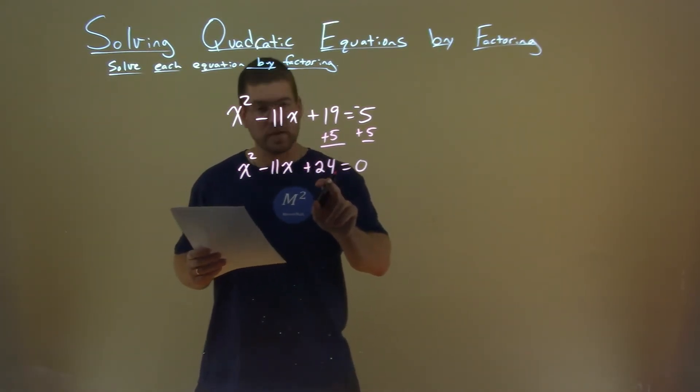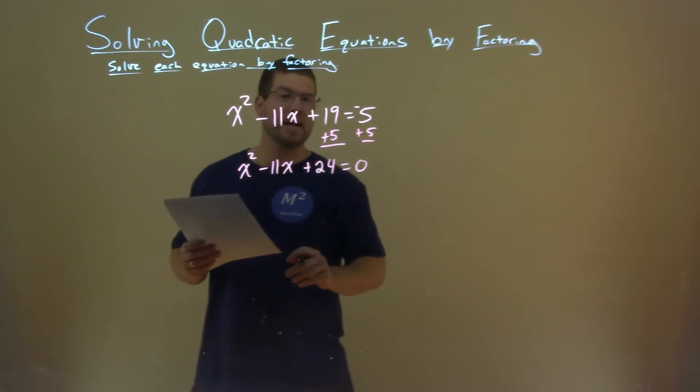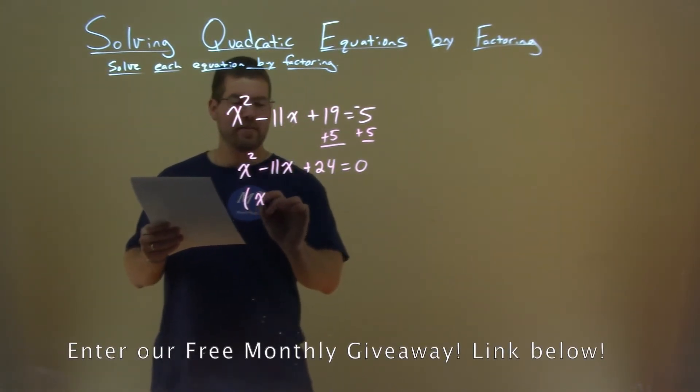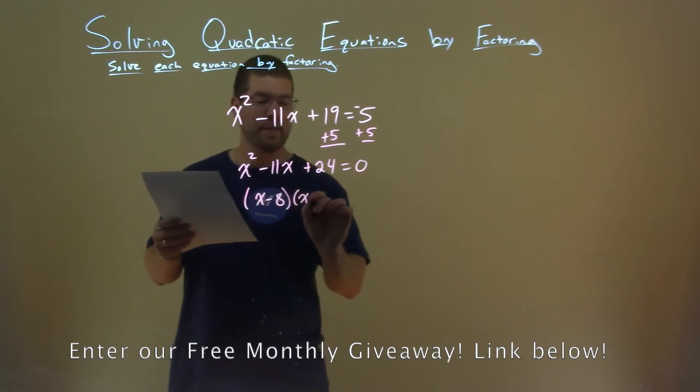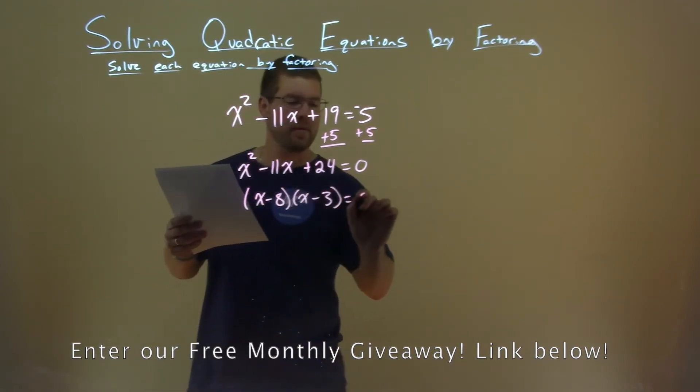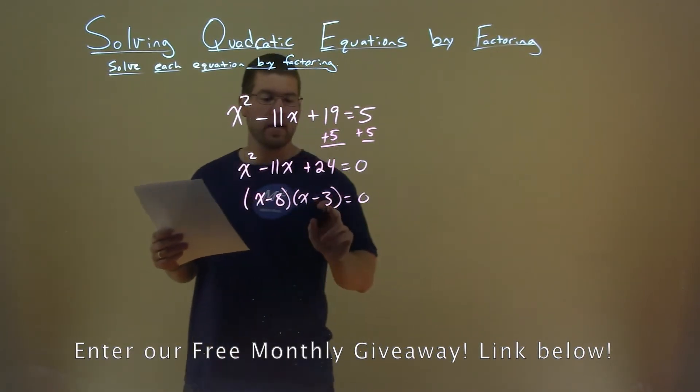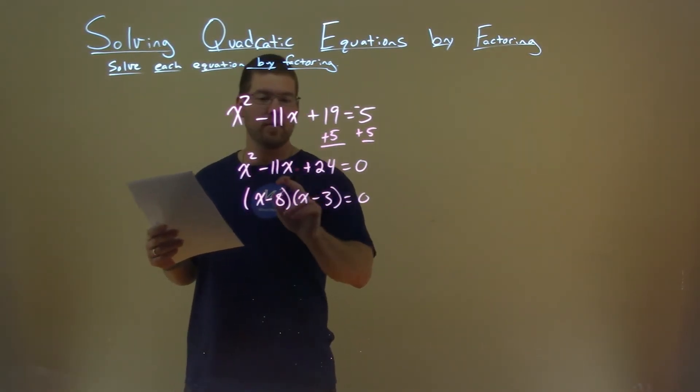What two numbers multiply to be 24 but add to be negative 11? x minus 8 and x minus 3. Negative 8 times negative 3 is a positive 24 and then if we add those together we get a negative 11.